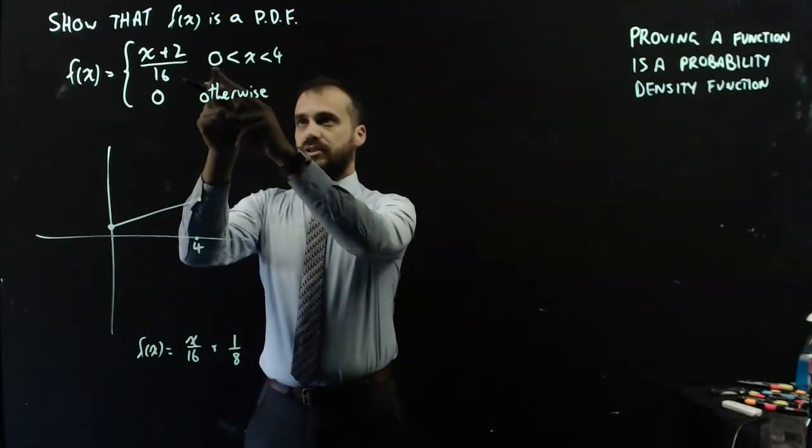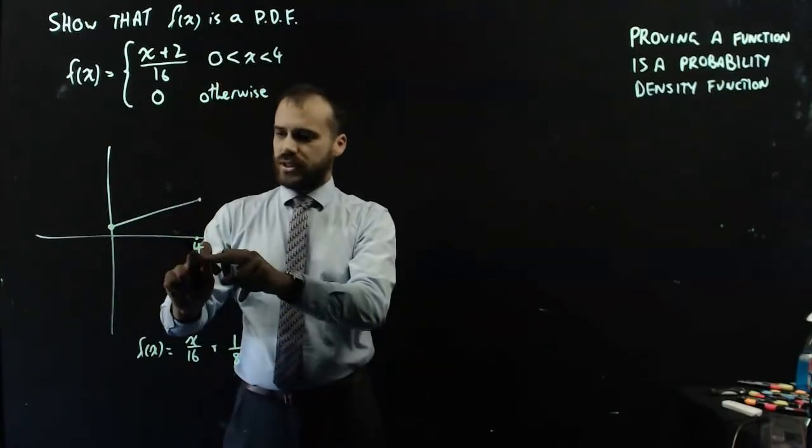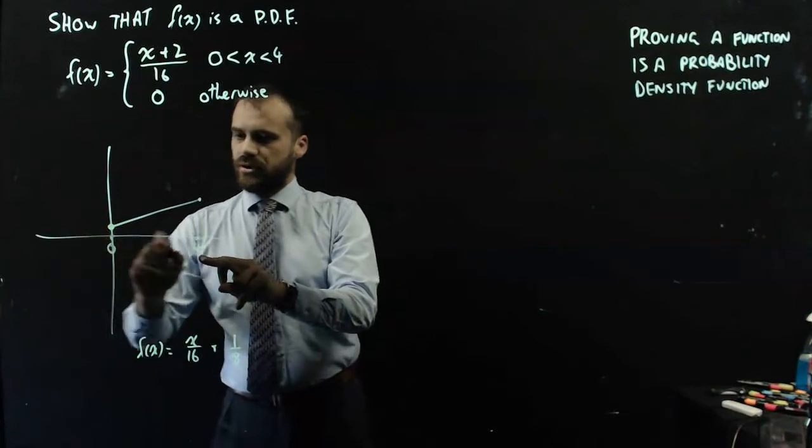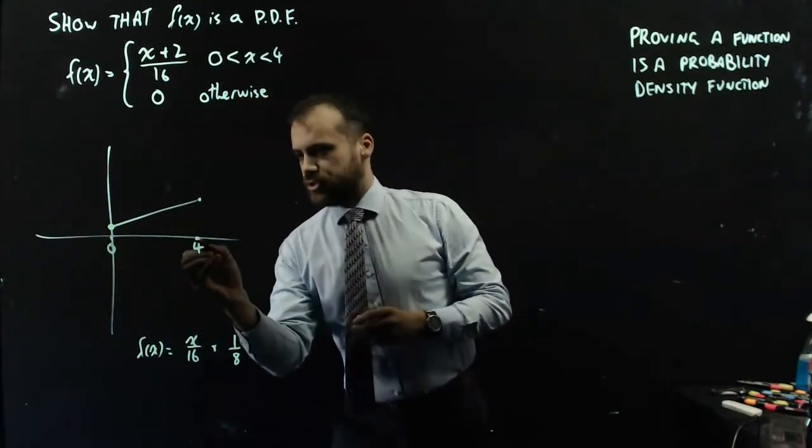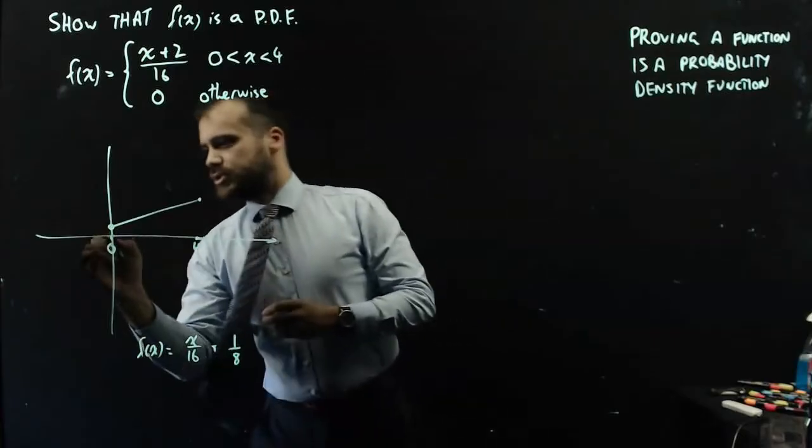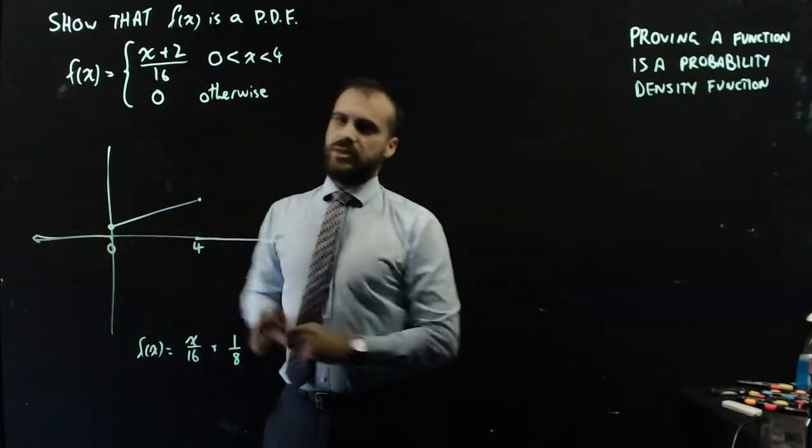The probability density function is between 0 and 4. So that's where 4 is, this is where 0 is. Everywhere else it's 0. There's a straight line here across there, there's a straight line here across there, so that's the only bit that we're interested in.